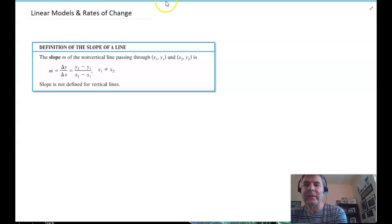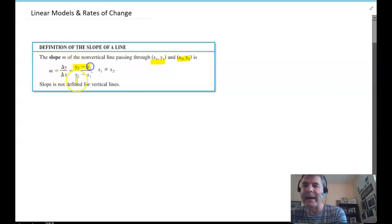This says that the slope of a line M, the slope of a non-vertical line passing through the points x1, y1, and x2, y2, is delta y over delta x. That's not a triangle, that's a Greek letter delta, and it stands for difference, which means we subtract, and it's always change in y over change in x.